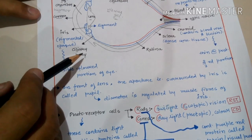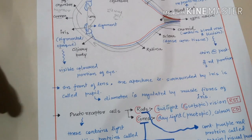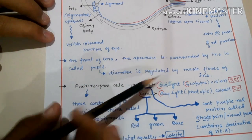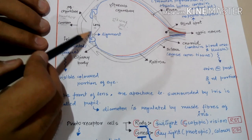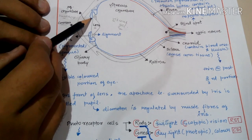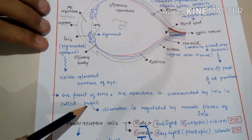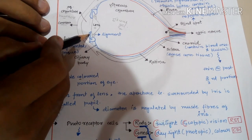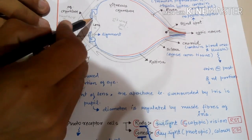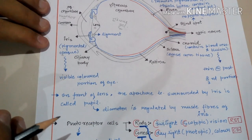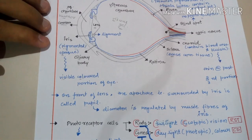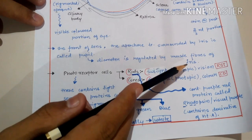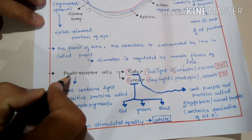Ligaments attached to the ciliary body hold the crystalline lens. In front of the lens, the aperture surrounded by the iris is called the pupil. The diameter of the pupil is regulated by the muscle fibers of the iris. This is a very important exam point: the diameter of the pupil is regulated by the muscle fibers of the iris.